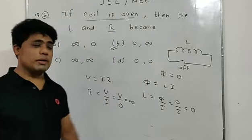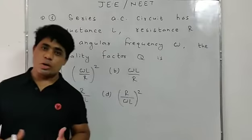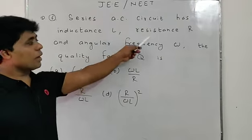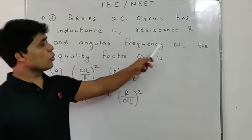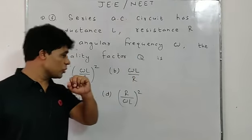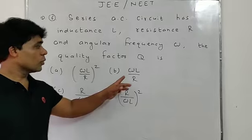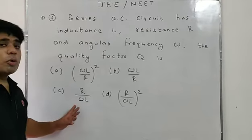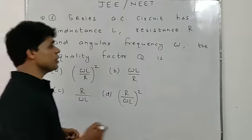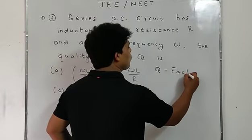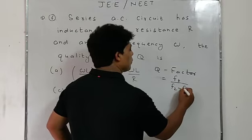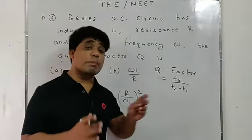Question number six: A series AC circuit has inductance L, resistance R, and angular frequency ω. The quality factor Q is to be found. Options: ωL/R², ωL/R, R/(ωL), and (R/ωL)². The quality factor formula is fR / (f2 − f1), the ratio of resonance frequency to bandwidth.